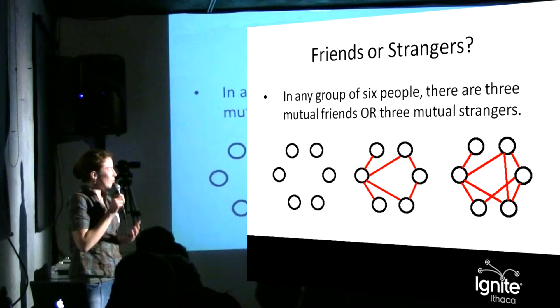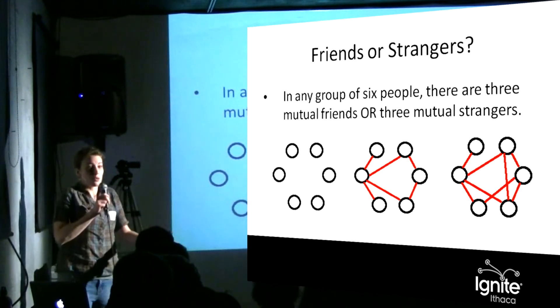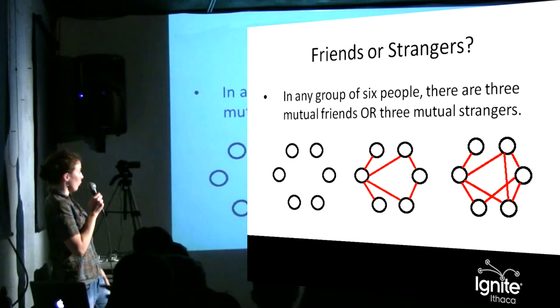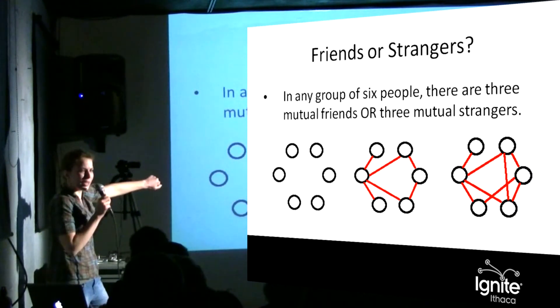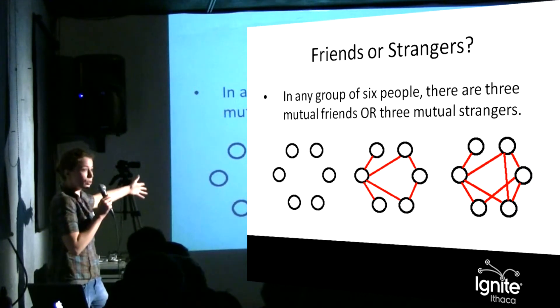How many people would you need to have three mutual friends and three mutual strangers in a group? These little nodes mean two people know each other if they're connected by red, and they don't if there's no connection.